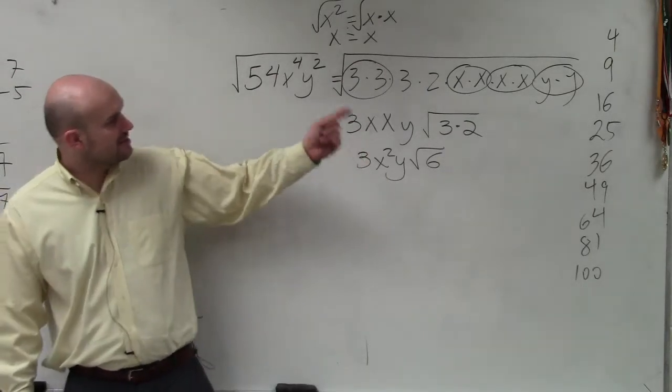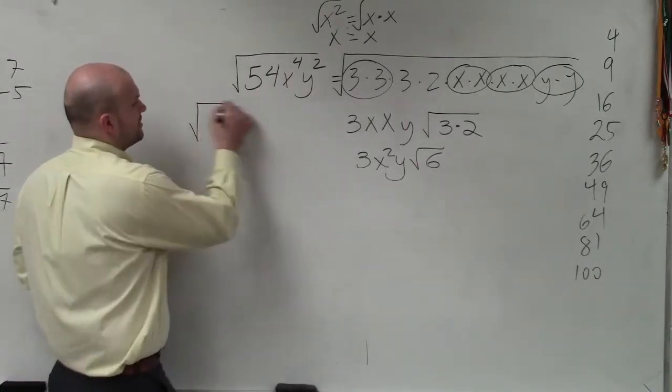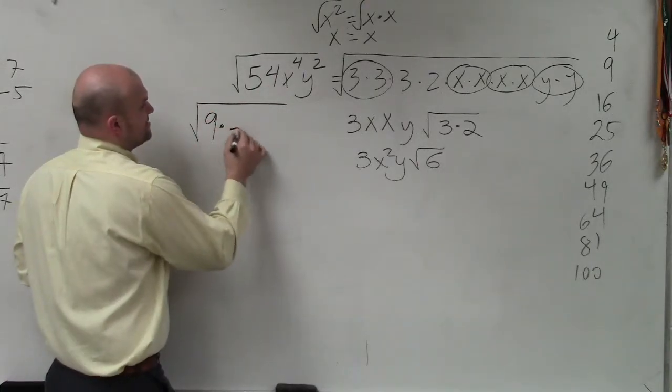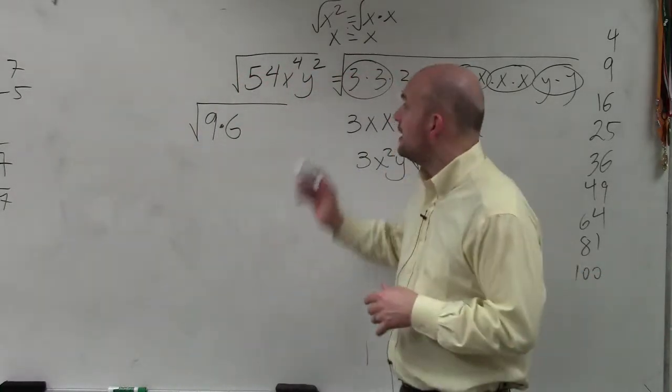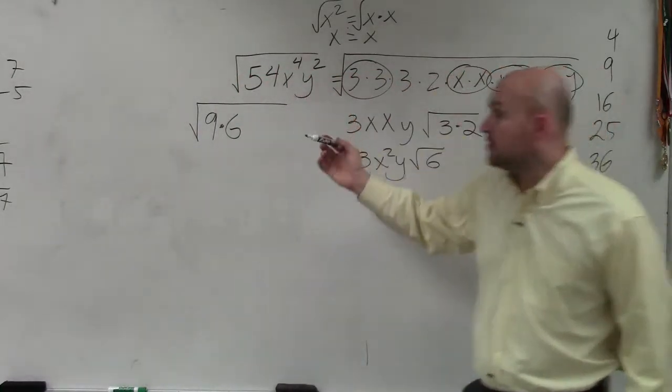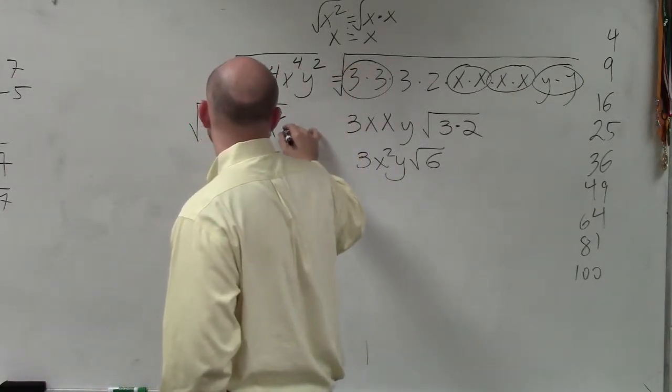So what we notice is 54, 9 divides into it, and 9 is a square number. So I write that as 9 times 6. Would you guys agree that 9 times 6 is 54? Yes. And x to the fourth can be written as x squared times x squared times y squared.